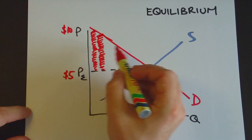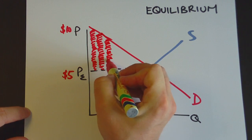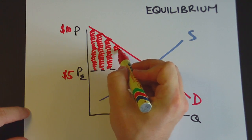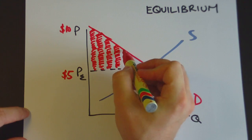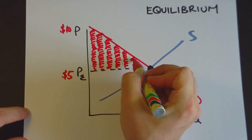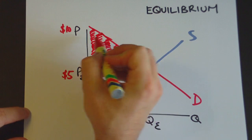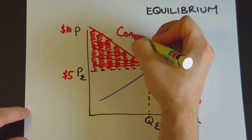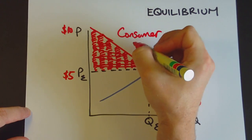So this whole area here it's a group of customers, a group of buyers who end up paying a lot less for the good than they're actually willing to pay. So this entire area here is what we refer to as consumer surplus.